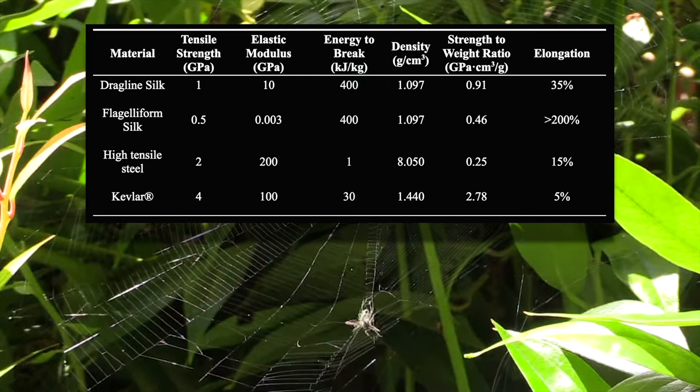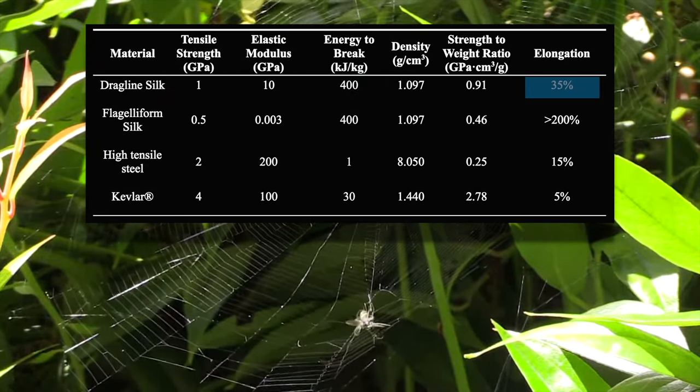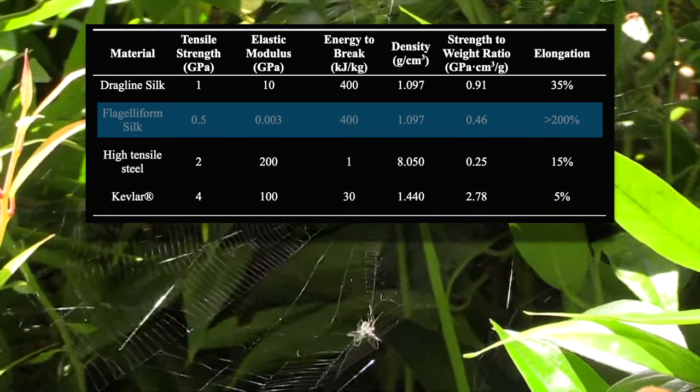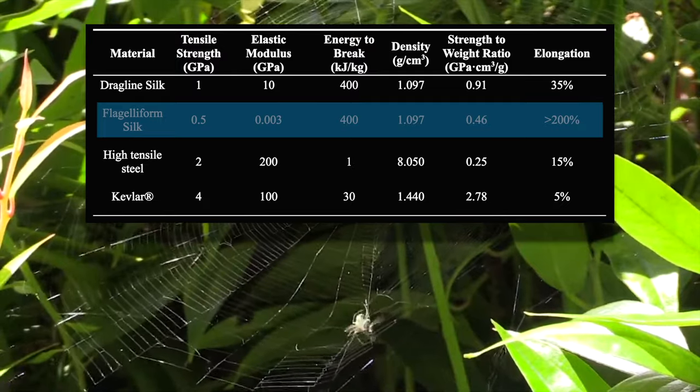Dragline silk is the focus of this video, due to its balance of strength and elasticity. Flagelliform silk is also important, as its properties and amino acid composition allow a greater understanding of the cause of dragline's properties.